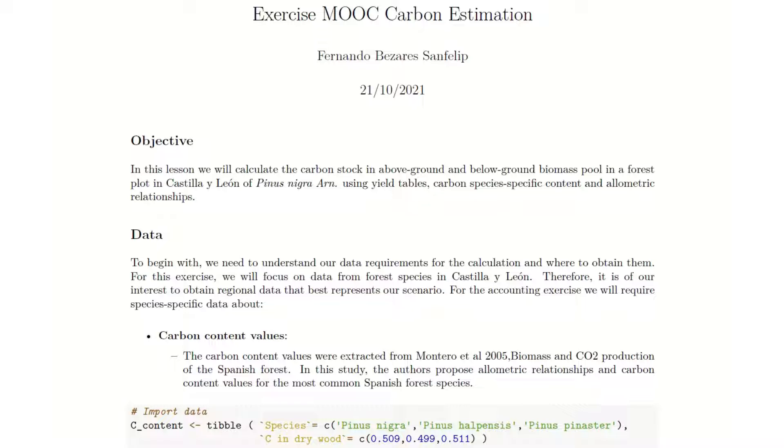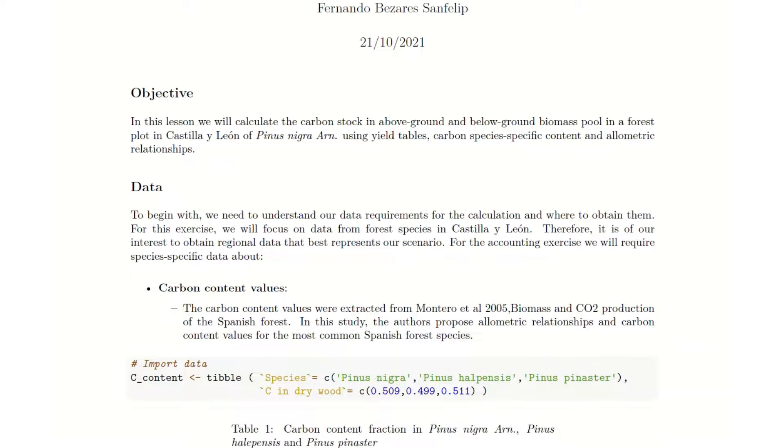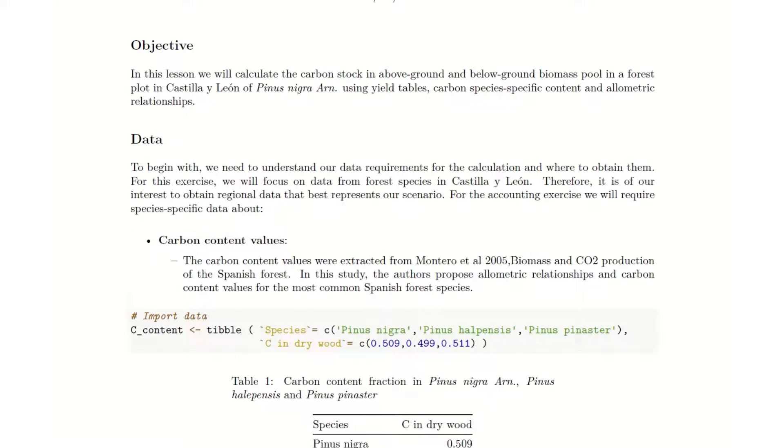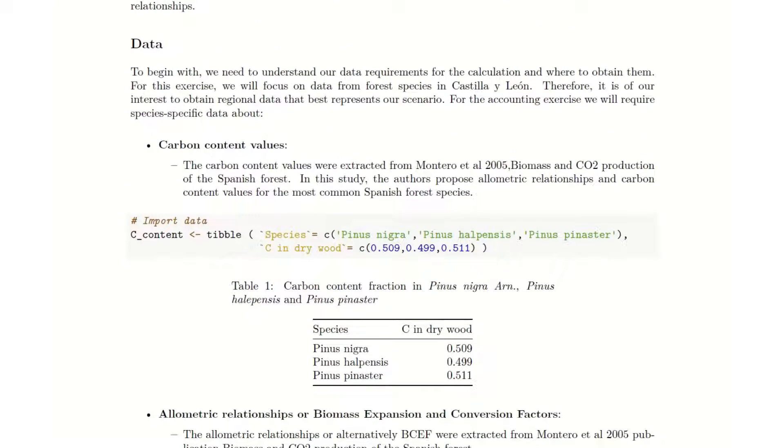For the content exercise, we will require species-specific data about carbon content values, which in our situation were extracted from Montero et al. 2005 in their publication of biomass and CO2 production of the Spanish forests. In this study, the authors proposed allometric relationships and carbon content values for the most common species in Spanish forests. Here you can see a brief snippet of how we imported the data in RStudio.